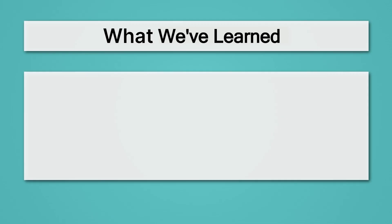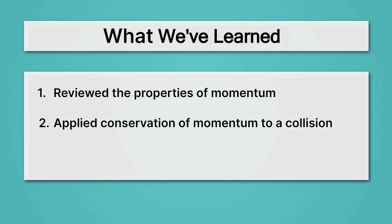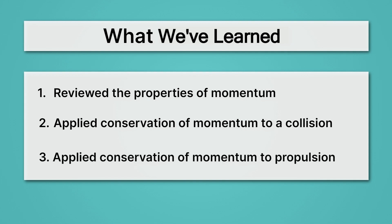Let's review what we've learned. First, we reviewed the properties of momentum. Most importantly, we saw that momentum is conserved, which means that the initial and final momentum have to be the same during a collision or during propulsion. Then we applied conservation of momentum to a collision, and lastly, we applied conservation of momentum to propulsion.